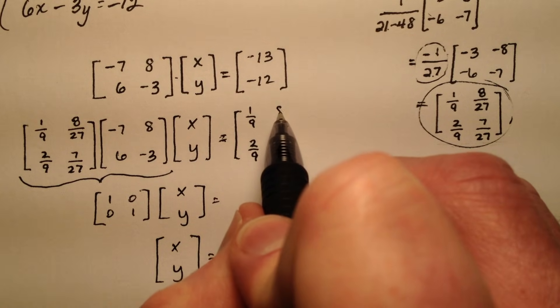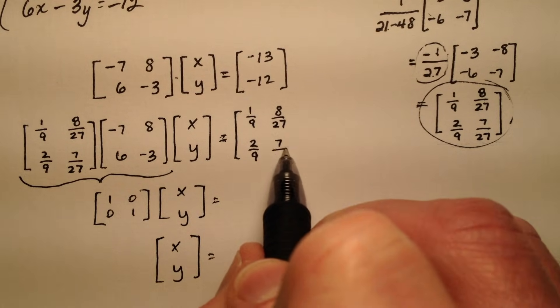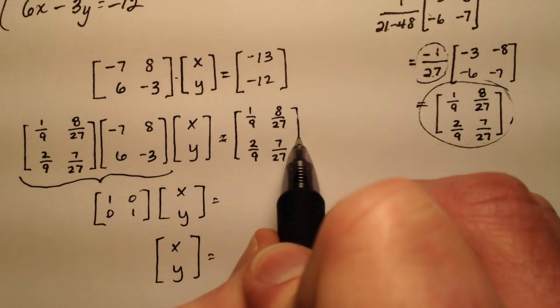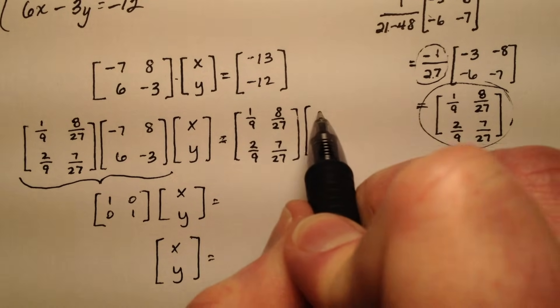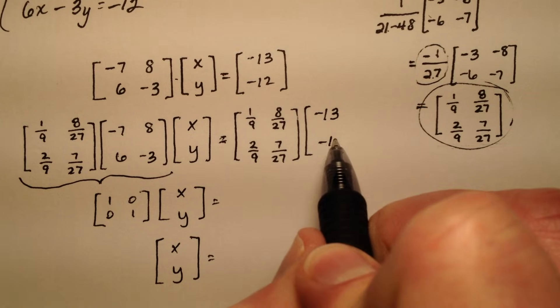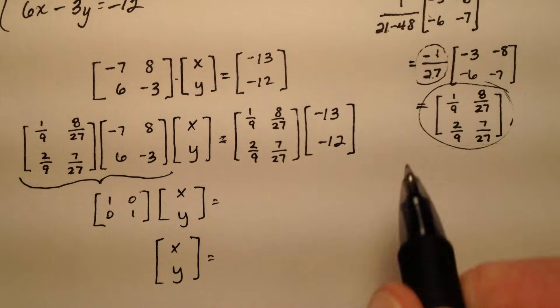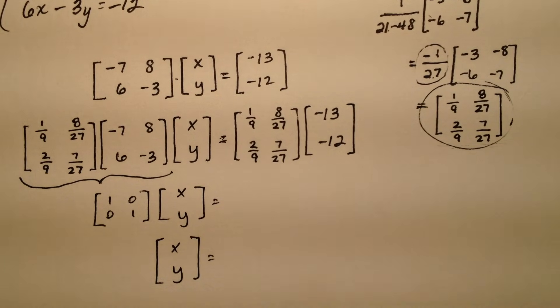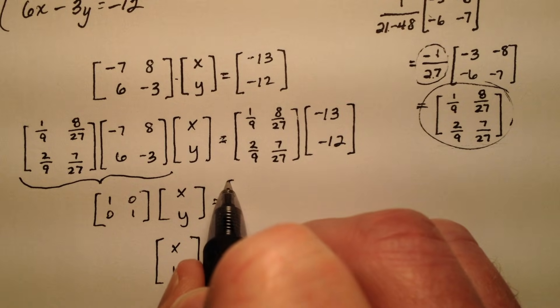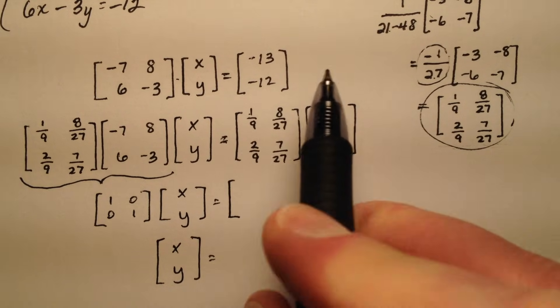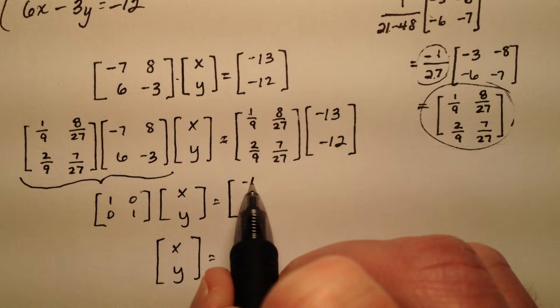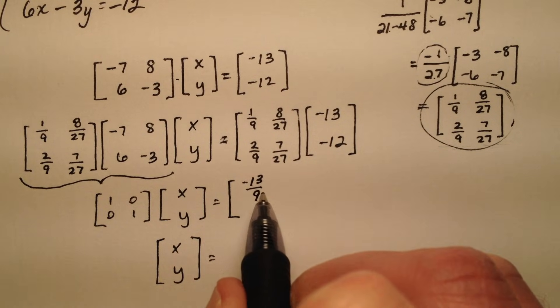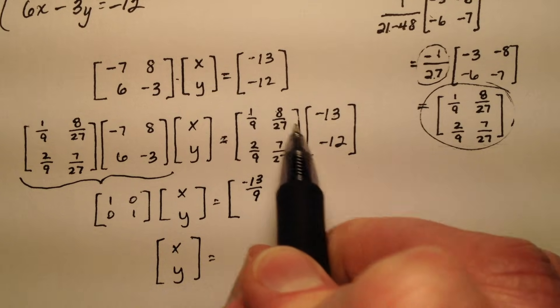So again rewriting all this stuff. So negative 13 and negative 12. Okay let's see if we can go ahead and do this arithmetic. So 1 9th times negative 13 will be negative 13 9ths and we're going to add that.